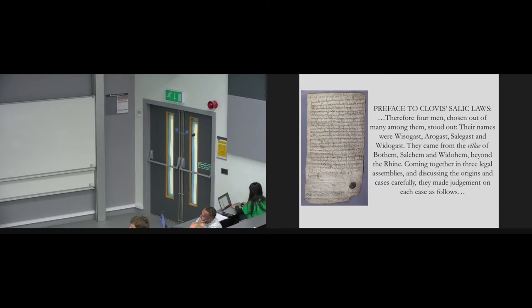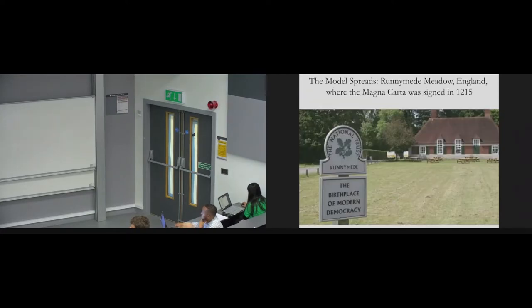Here's what Clovis did. One thing he did was promulgate the Salic law. Here's a preface of a surviving version of the Salic law. Therefore, four men chosen out of many amongst them stood out. Their names were Wizzogast, Aragast, Salagast, and Widogast. It's like Lord of the Rings. They came from beyond the Rhine. Coming together in three legal assemblies and discussing the origins and cases carefully, they made the law. So where did the Salic law come from? Clovis, he was king, crowned himself in purple like the Romans. He called himself Caesar. What was he doing? Shouldn't he have been writing the legal code? The Salic law is an attempt to systematize social norms of the Franks. It's not some giant top-down engineering control of society. It's a codification of social norms, of feuding principles.